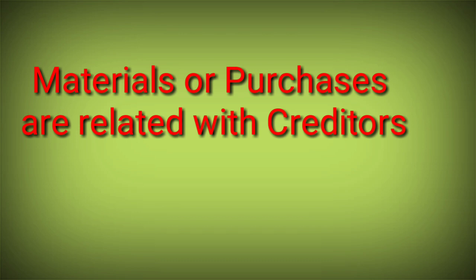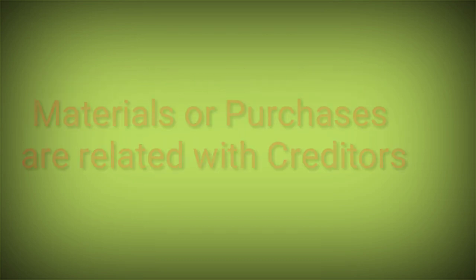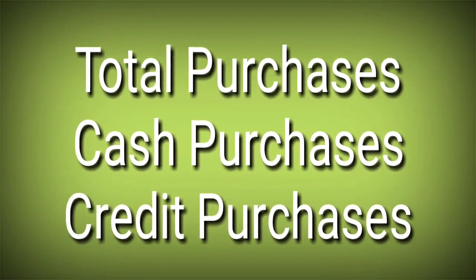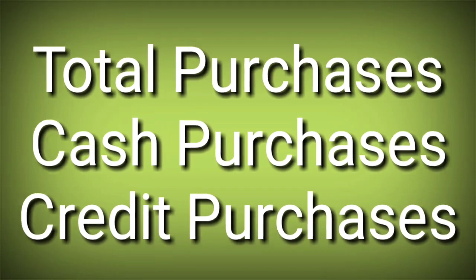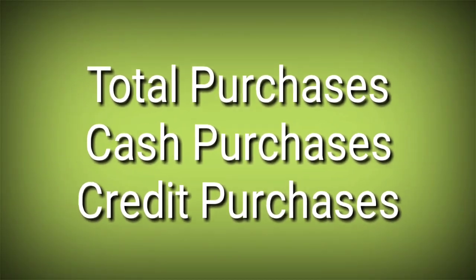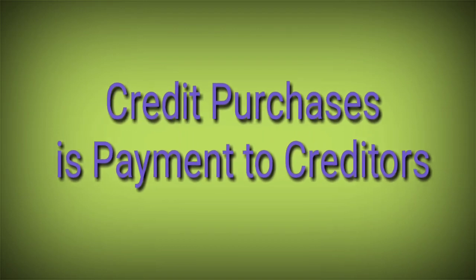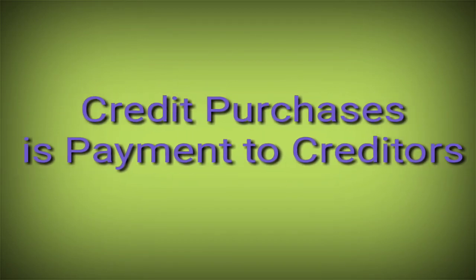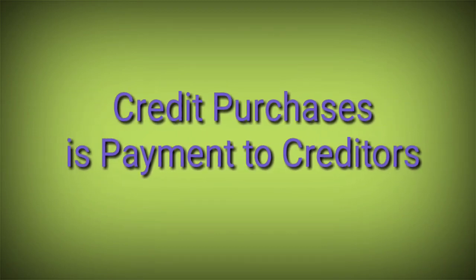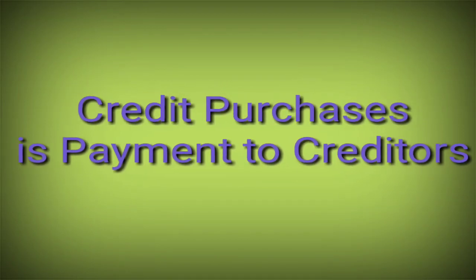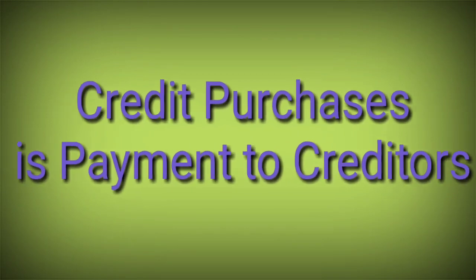The next adjustment relates to creditors, which is connected with materials and purchases. If you have materials or purchases, they relate to creditors. Total purchases will be given in the question, and there will be an adjustment for cash purchases — for example, 10% cash purchases and the balance as credit purchases. Credit purchases are known as payment to creditors. Payment to creditors is an outflow, and collection from debtors is an inflow. In a cash budget, inflow includes cash sales and collection from debtors, while outflow includes payment to creditors.